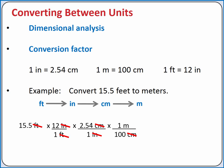Since multiplying or dividing by 1 doesn't change the number, you could leave them out of your calculation. You should get the number 4.72, so 15.5 feet is 4.72 meters.